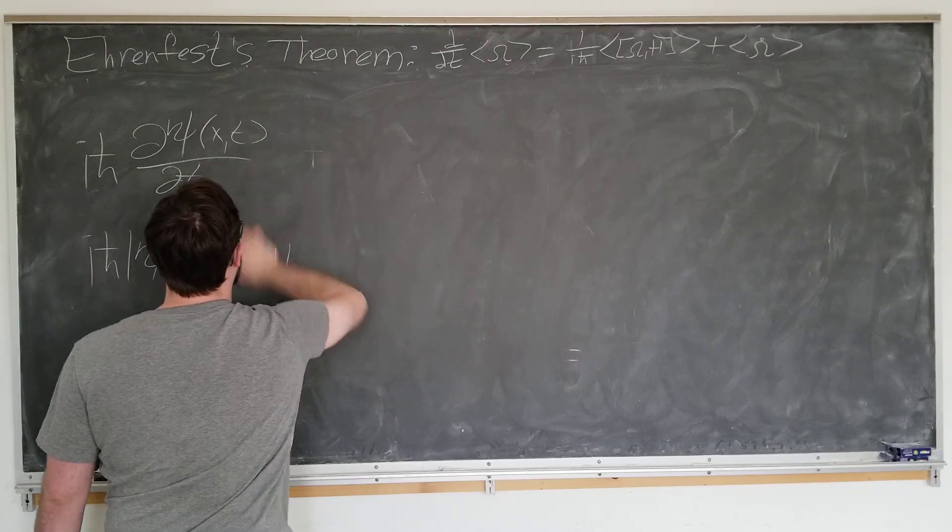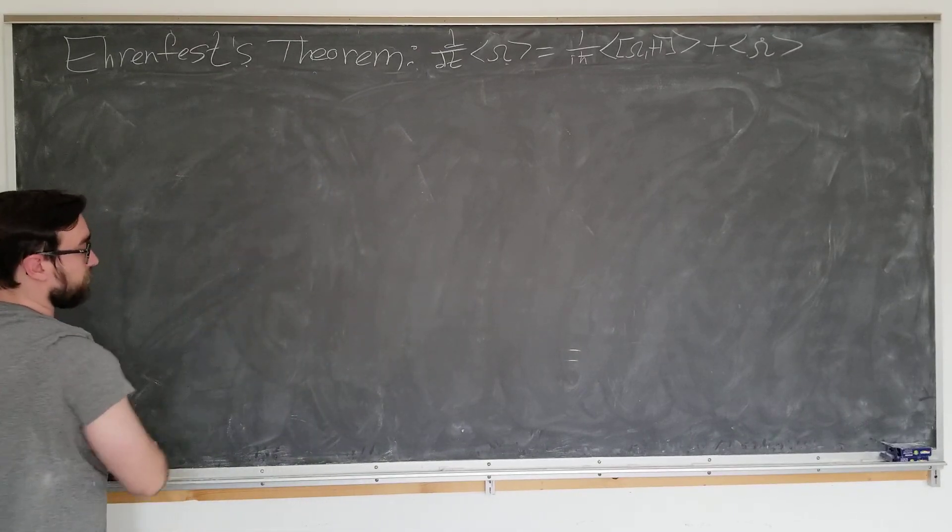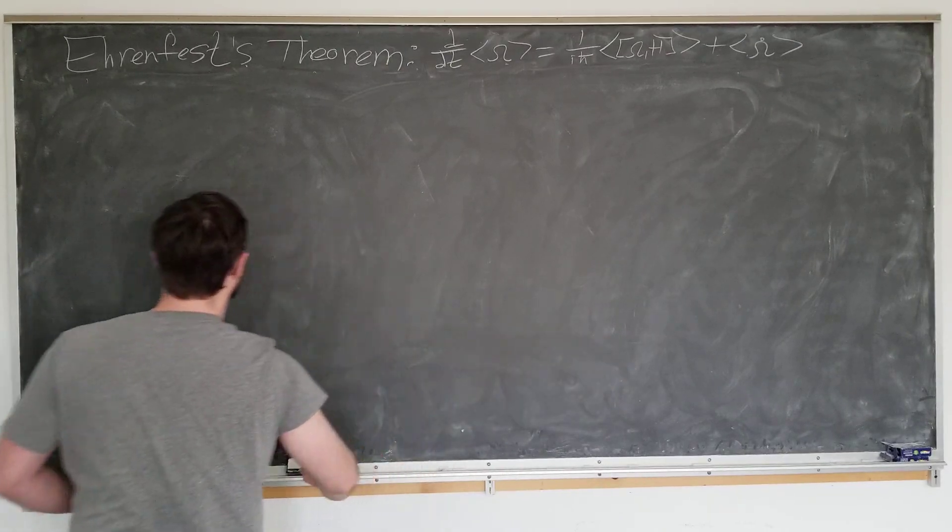A fun fact: the Ehrenfest theorem follows only from the Schrodinger equation, and if you want to, you can go the other way around. Start with the Ehrenfest theorem and derive the Schrodinger equation as well.